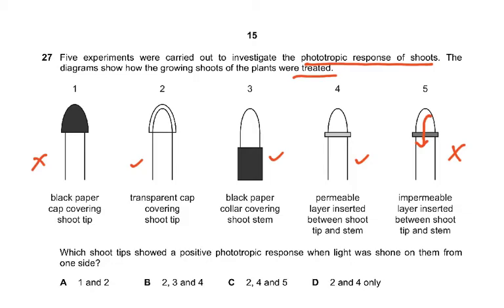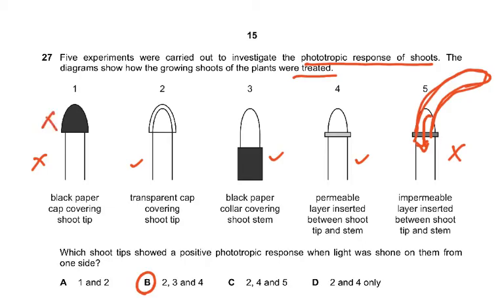Which shoot tips showed a positive phototropic response when light was shone on them from one side? The answer is B, which is two, three and four. It did not happen in one because an impermeable layer was inserted, so the auxin cannot diffuse down to cause cell elongation. The shoot grows towards the light — it doesn't move, it grows. In the covered case, no light is received so no auxin is produced.